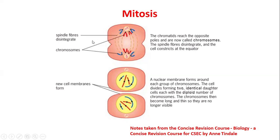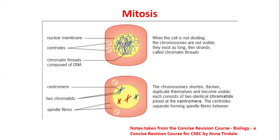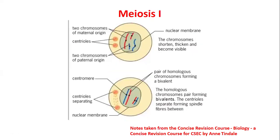The spindle fiber disintegrates and the cell constricts at the equator. At the constriction, a new cell is formed — it closes in, producing two identical daughter cells, each with the diploid number of 46 chromosomes. The nuclear membrane forms around each group of chromosomes, and the chromosomes become long and thin again, returning to how they originally appeared when not replicating.